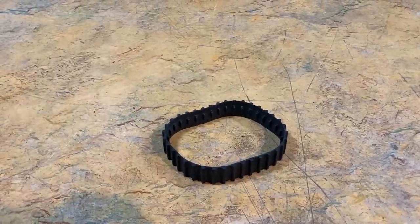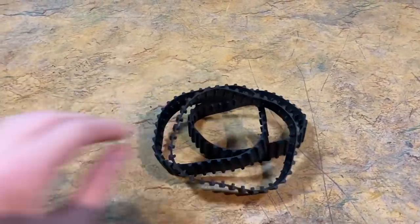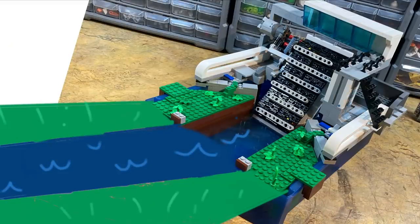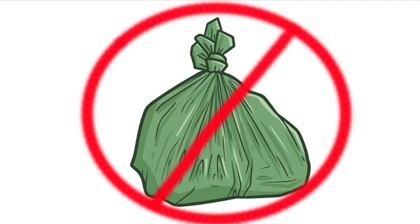To start off the ocean cleaner, I decided to use treads to scoop up the trash. The main idea is that this machine would be placed at the end of a majorly polluted river in order to stop the flow of trash into the oceans.